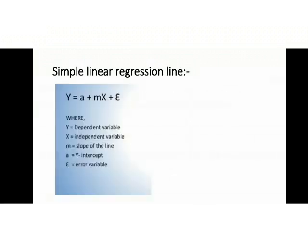Simple linear regression line. As you can see, here is an equation in which Y is equal to a plus mX plus e. Here, Y is dependent variable, X is independent variable, m is slope of the line and a is Y-intercept or constant and e is the error variable.